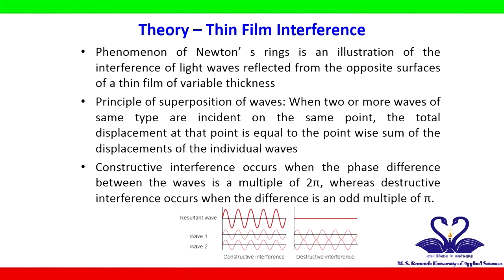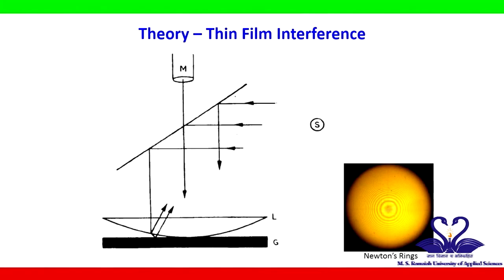Two waves can interfere constructively or destructively depending upon the phase or path difference between them, as shown in figure. When a plano-convex lens is placed on a plain glass plate, a thin film of air is enclosed between the lower surface of the lens and the upper surface of the glass plate. Interference fringes are produced due to the superposition between the light reflected at the lower surface of the lens and the upper surface of the plate. With monochromatic light, bright and dark circular fringes called Newton's rings are formed, as shown in figure.